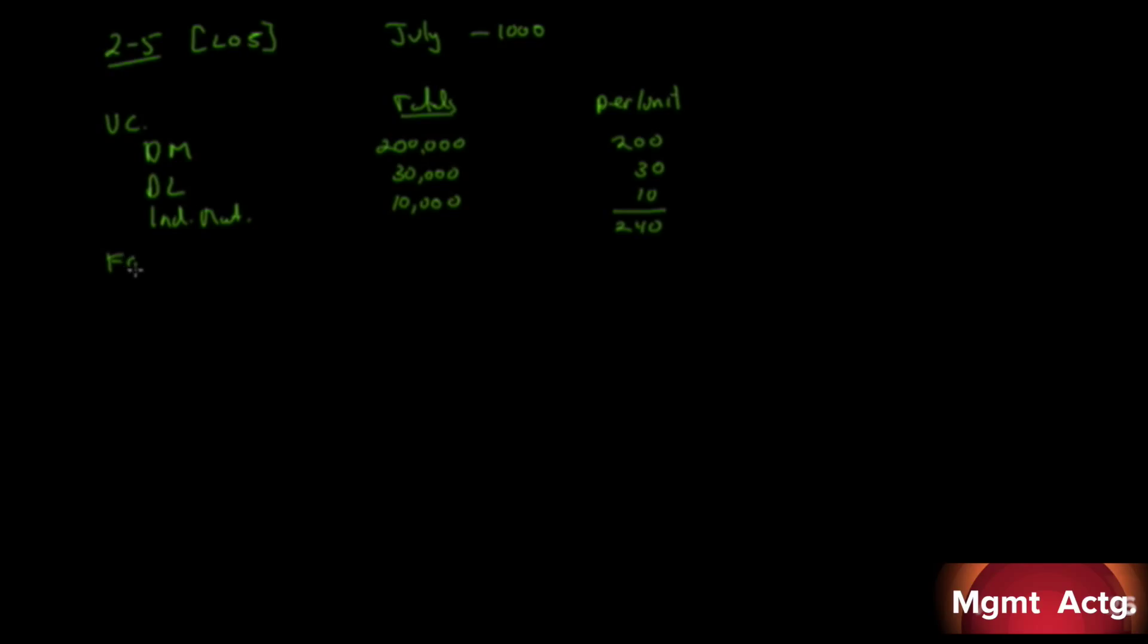Let's move on to the fixed costs now. We have the supervisor's wage, the scheduler's wage, and warehouse expense. Our totals here are $4,000 for the supervisor's wage, $2,000 for the scheduler's wage, and $5,000 for warehouse expense. We need the per unit amount, so we divide each by 1,000. We get $4, $2, and $5. That gives us an $11 cost per windshield in fixed costs.